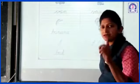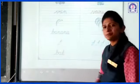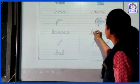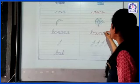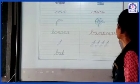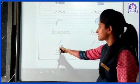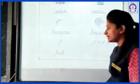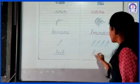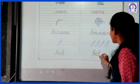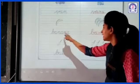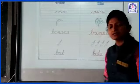Banana. Ek hi banana hai — one single banana. B-A-N-A-N-A, banana. Yahan par three bananas hain. To hum kya likhenge? Same spelling likhenge — B-A-N-A-N-A, banana — aur plural form mein likhne ke liye S add karna hai. Banana, bananas. Isi tarah bat, bats.